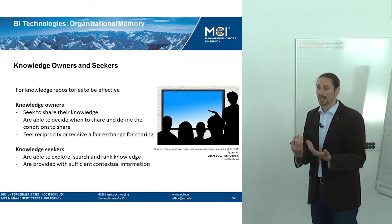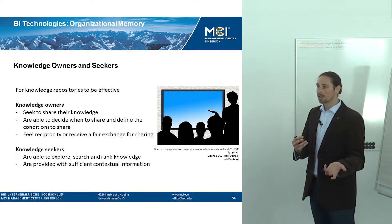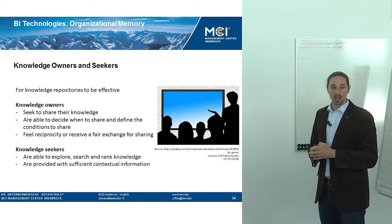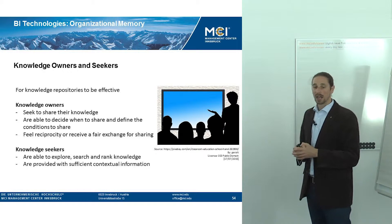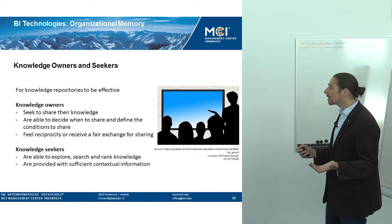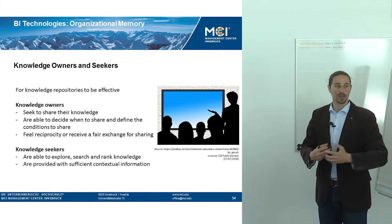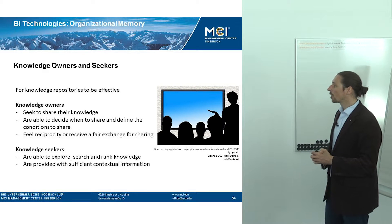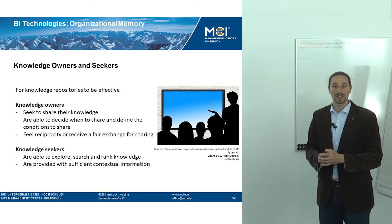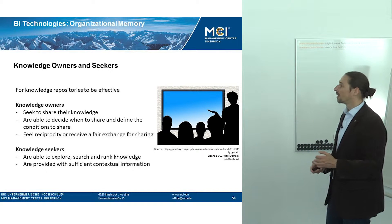Somehow we need somebody that is able and wanting to share knowledge — otherwise we cannot generate knowledge. On the other hand, to have a proper knowledge management exchange and proper use of knowledge repositories, you also need a knowledge seeker — somebody who wants to learn something, who needs the knowledge. Knowledge seekers are able to explore, search, and rank knowledge or information. Knowledge seekers are also provided with sufficient contextual information, which is relevant because contextual information helps you decide whether a certain piece of information is relevant or not.